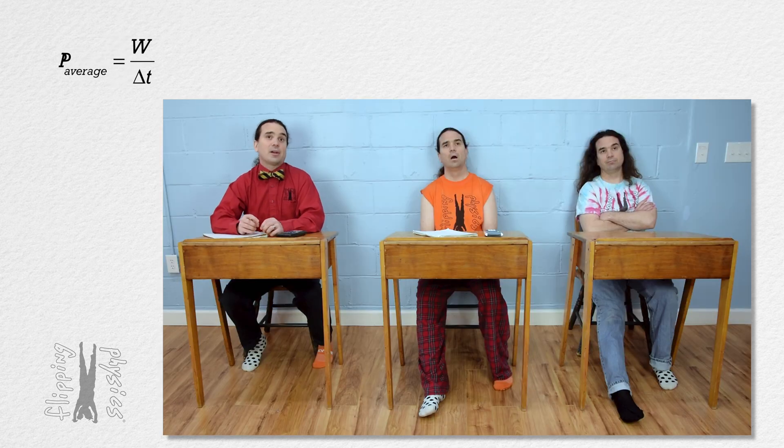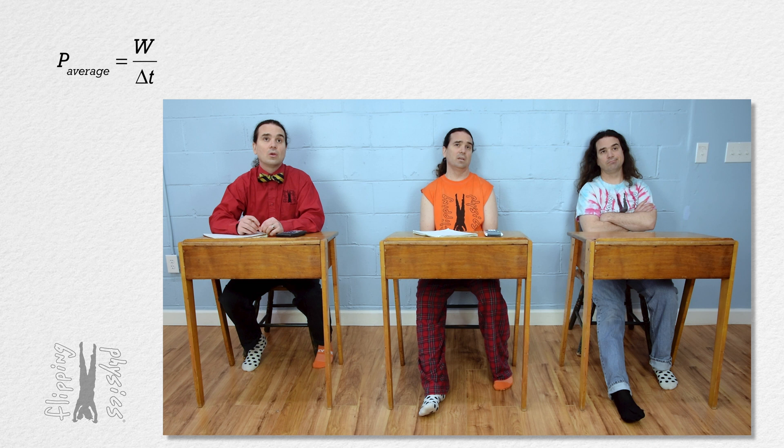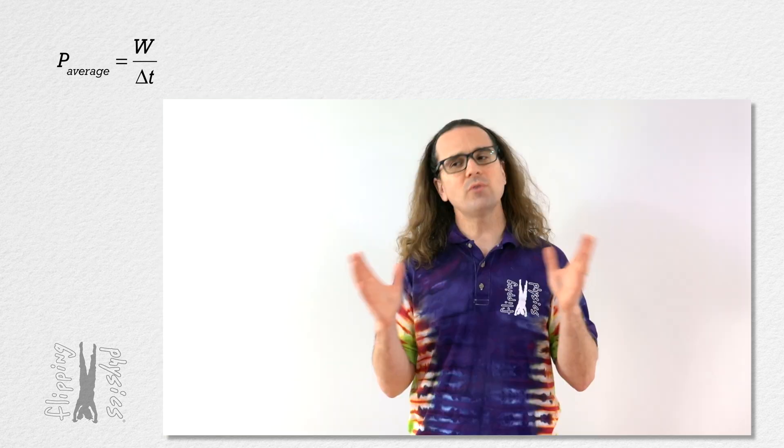And that this is work over change in time reminds us that this is what type of power, class? Average power. Right, average power because it is over a time duration, not instantaneous power. Instantaneous power is at a specific time, not over a change in time.